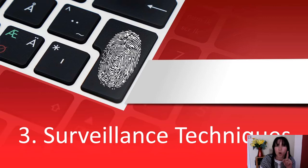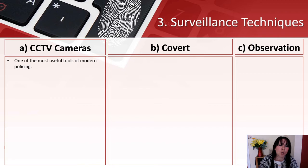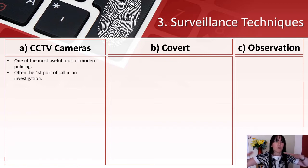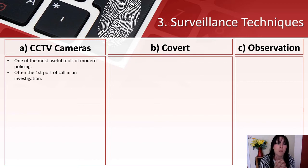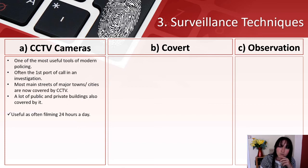Number three: surveillance techniques. There are three types you need to know about — CCTV, covert, and observation. CCTV cameras are one of the most useful tools of modern policing — probably drones will feature in the future too, as they're flexible and can move around an area, unlike static CCTV cameras. CCTV is often the first port of call in an investigation; most main streets of major towns and cities are now covered.